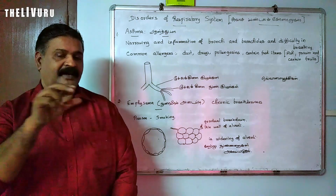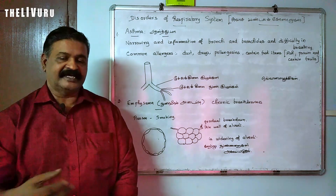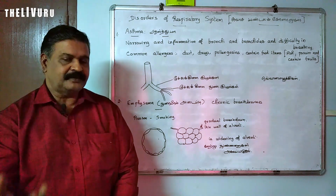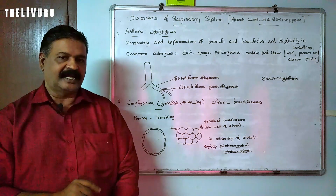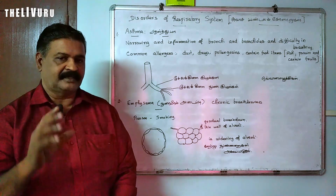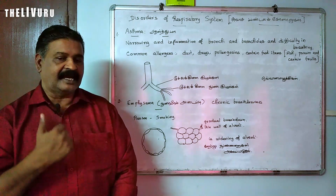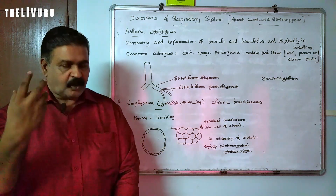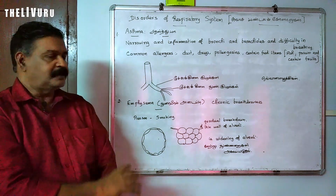If you look at occupation — working in a factory with dust particles affects the respiratory system. When the occupation is in a hospital or industrial setting, precautions such as masks should be worn. Substances like petrol, alcohol, and other chemicals are highly carcinogenic and can cause lung cancer. So our environment, occupational level, and social impact all contribute to respiratory disorders.